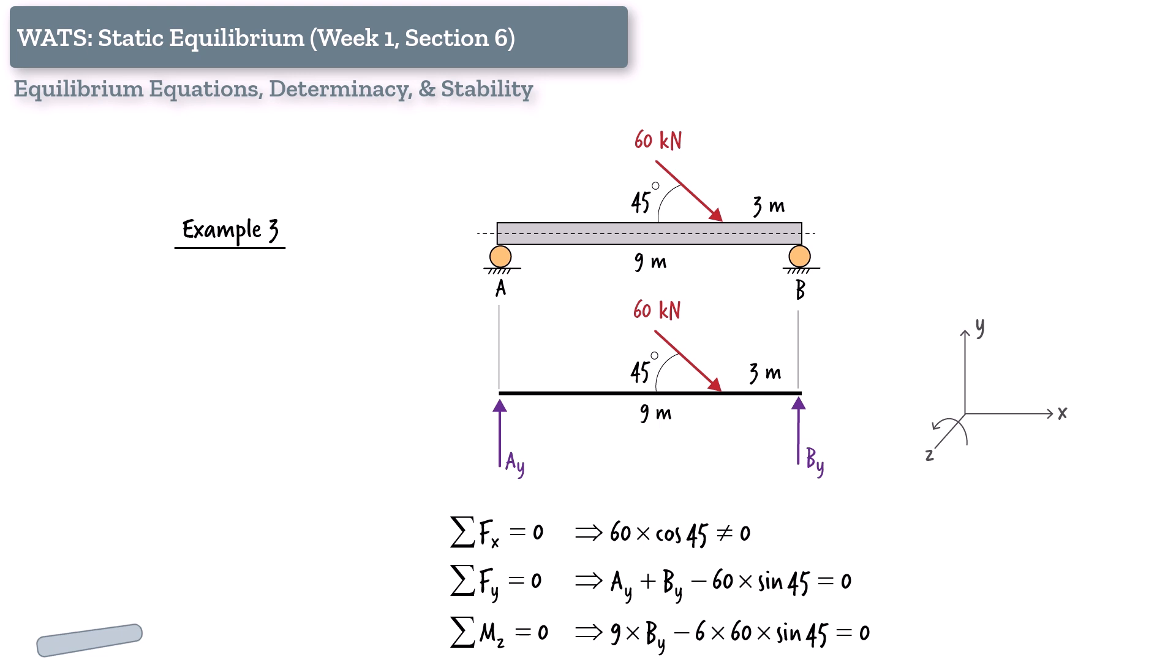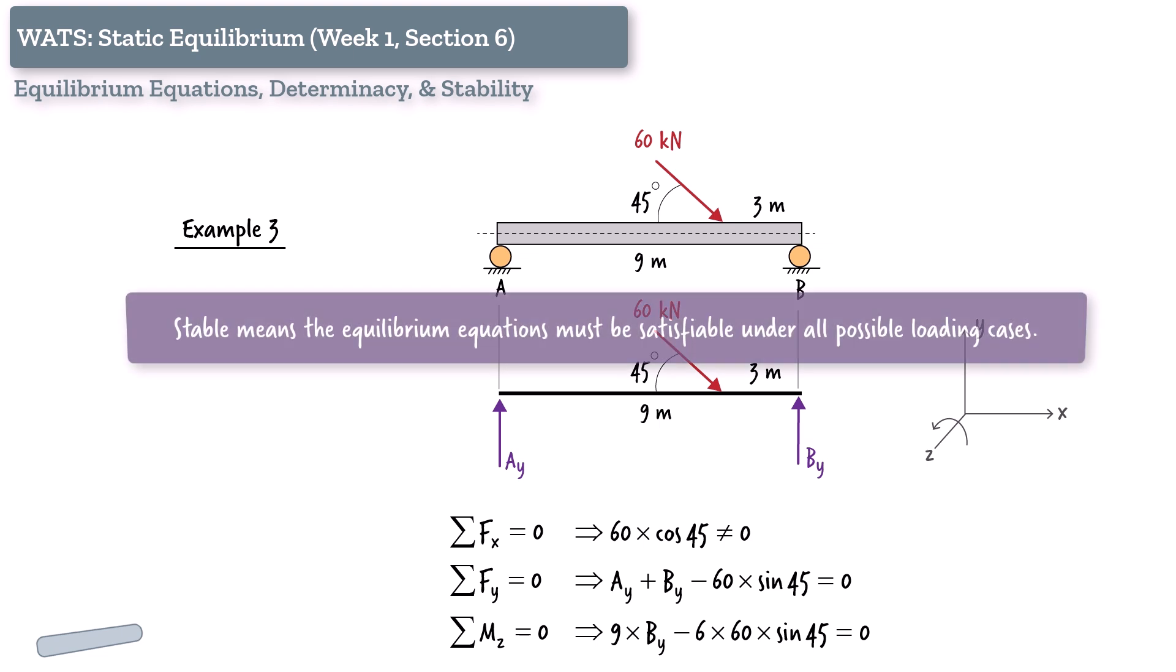And that leads us to an important conclusion. For a structure to be considered stable, the equilibrium equations must be satisfiable under all possible loading cases. Just because we can solve the equilibrium equations when the beam is subjected to a vertical load, doesn't mean it is stable. To be labeled stable, the structure must resist all possible applied loads, not just a few.